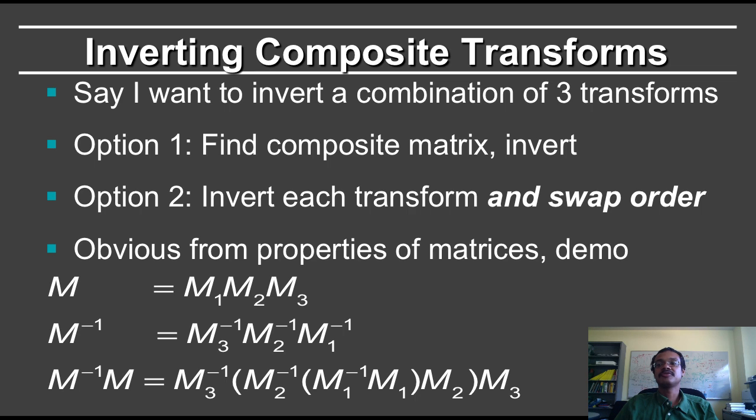Similarly, for transformations, you have to invert each transform and then swap the order. This is obvious from the properties of matrices. And it is also obvious if you think about the way transformations are done. The last transformation done has to be the first one undone.